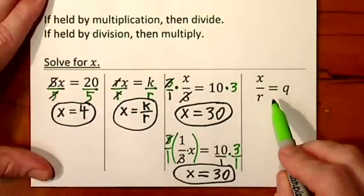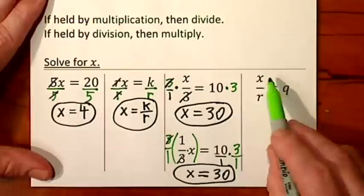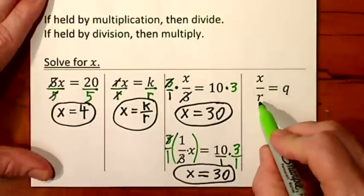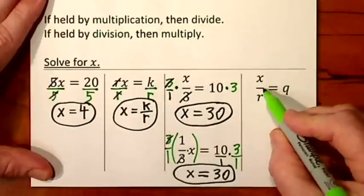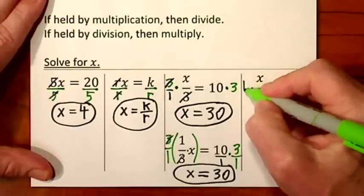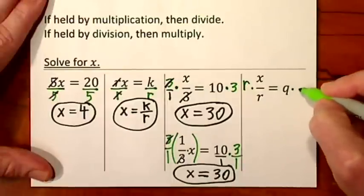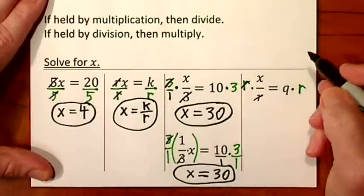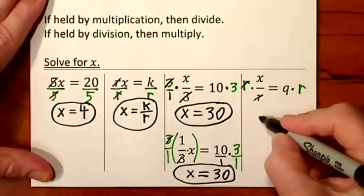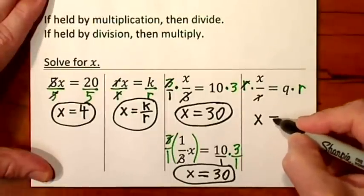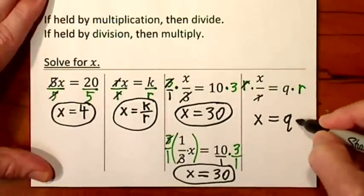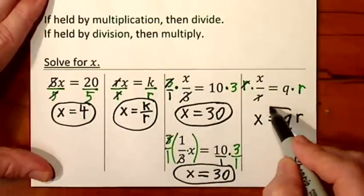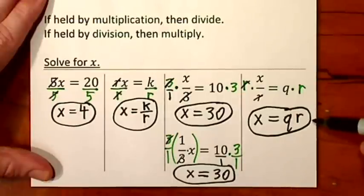Looking at our last example on this page, even if it's all letters, I want x by itself. I'll get rid of the r — it's held by division. So I'll multiply by r on each side. r goes into itself one time, leaving 1x, or simply x. And I can write this as qr — I don't have to put the multiplication dot. So this is the answer.